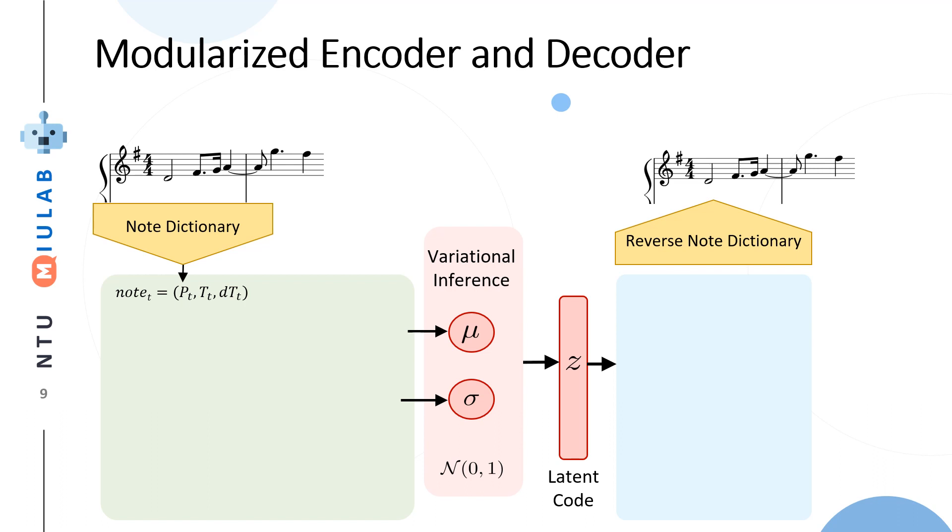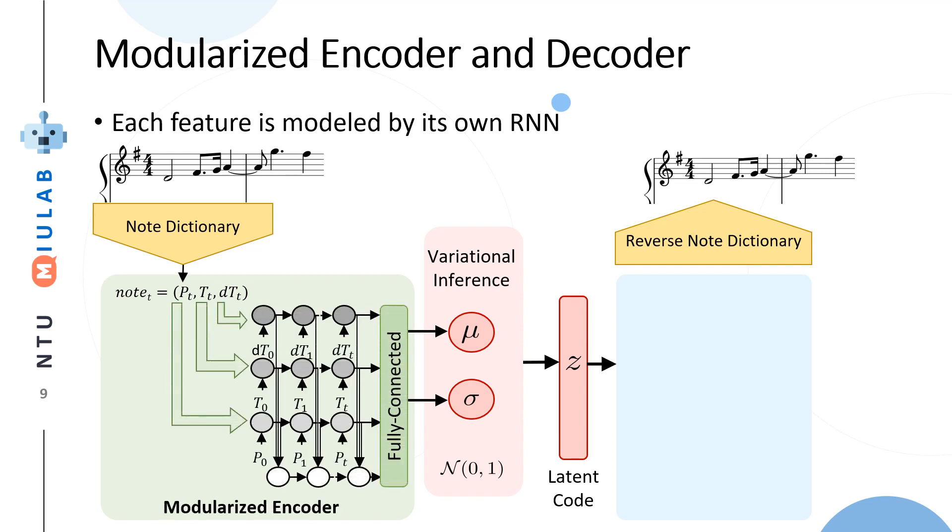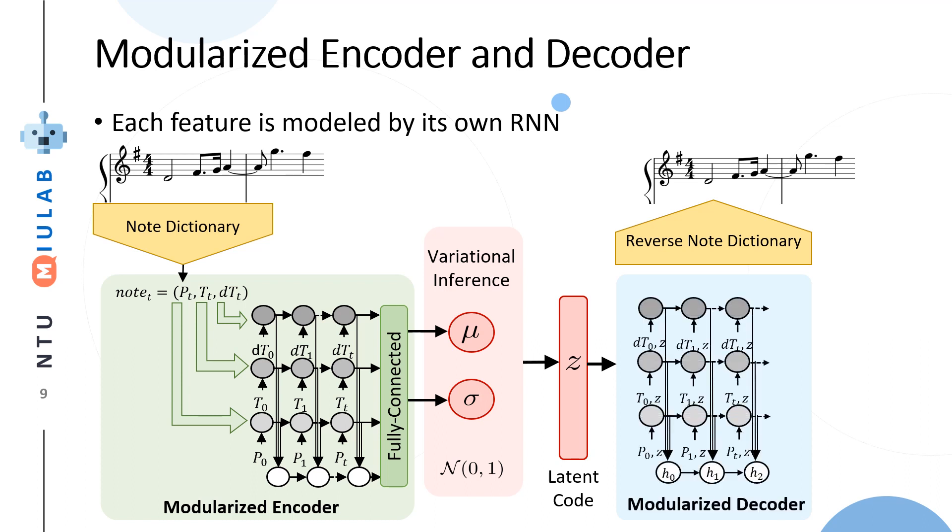However, in order to model the recurrent information for each attribute, we slightly change the encoder and decoder into a modularized encoder and decoder. In this variational autoencoder, we try to model each feature like a note attribute by its own RNN. For example, we can have the pitch-specific RNN to model the dependency for pitch, and the duration-specific RNN to model information for duration, and so on. In the decoder side, we can also have a very similar decoder. We want to model each type of feature independently.